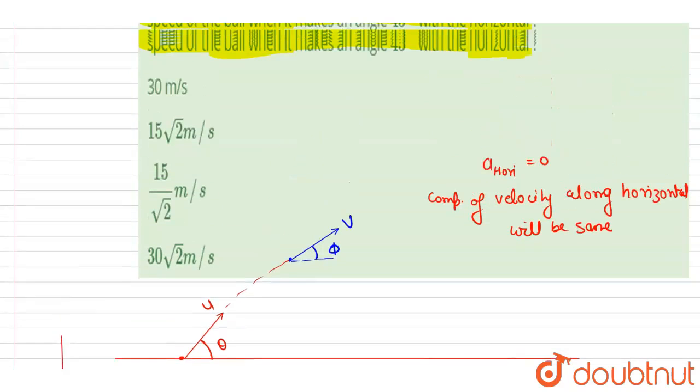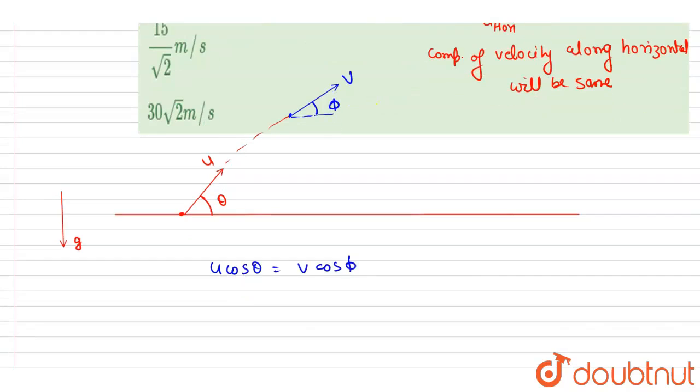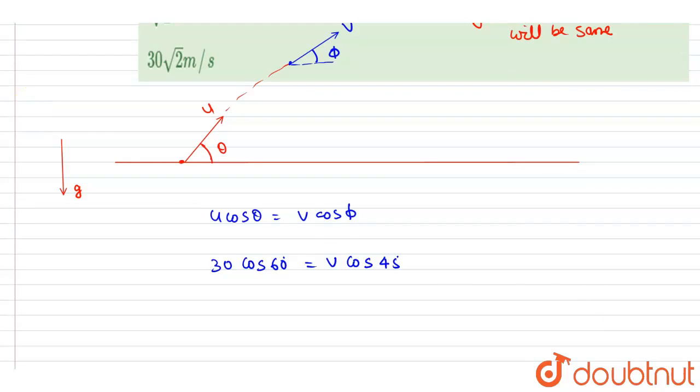And if you see, u is given here, it is 30, theta 60, phi 45. Put these values: 30 cos 60 equals v cos 45. So cos 45 is 1 by root 2, and cos 60 is half. So it will be 15 by 1 by root 2.